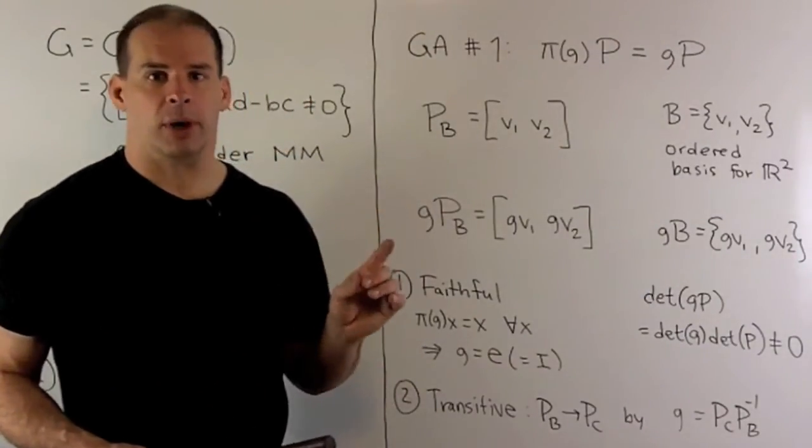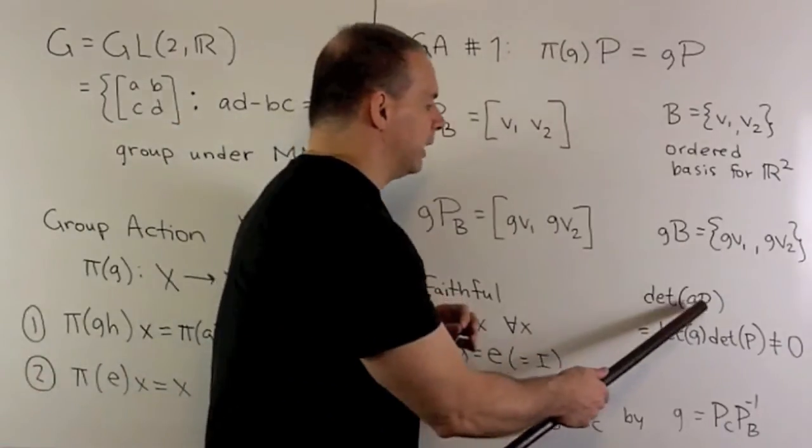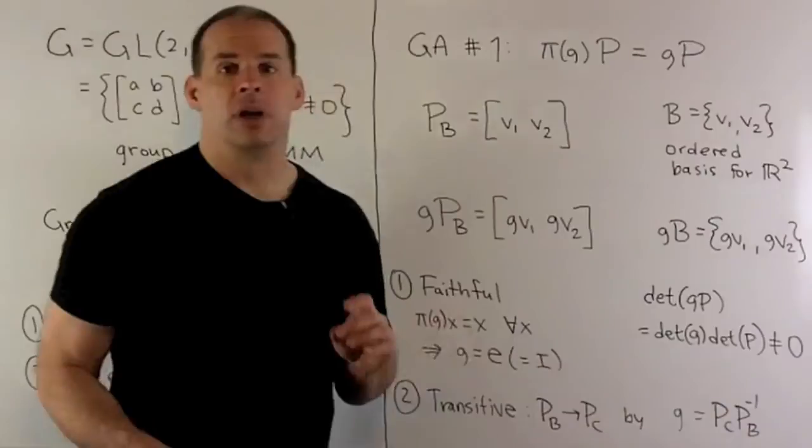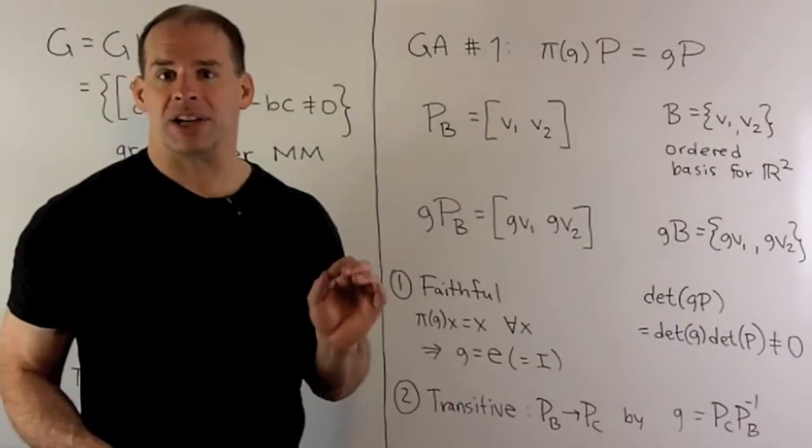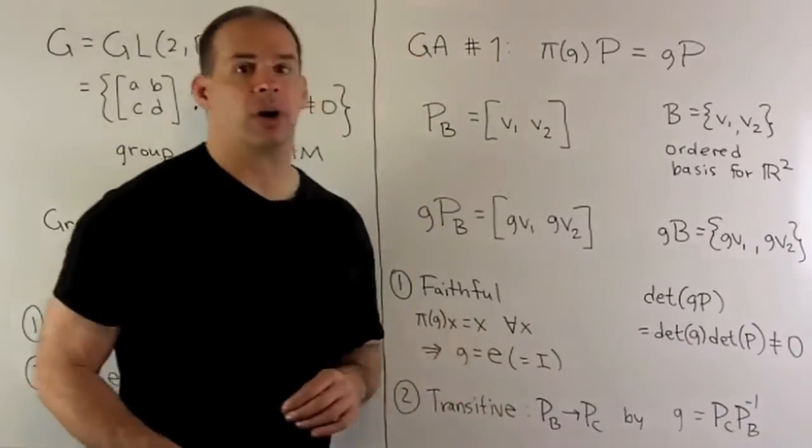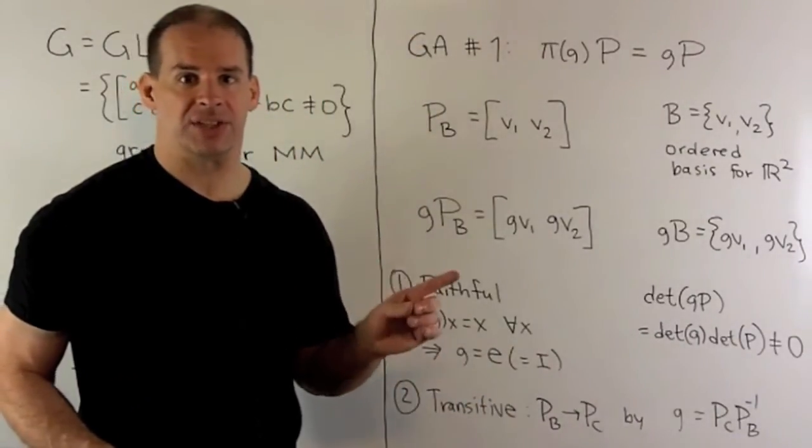if we take the determinant of G times P_B, we use the product rule for the determinant. So, that's going to mean we're taking determinant of G times determinant of P. Both are non-zero, so the product's non-zero, which means determinant of G times P is non-zero. So, it's in GL(2,R), so we have a basis.